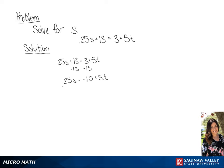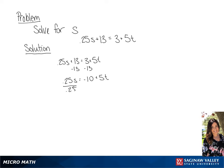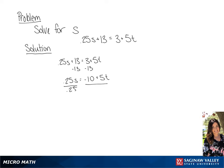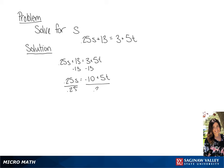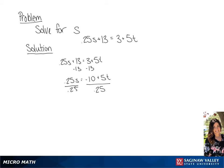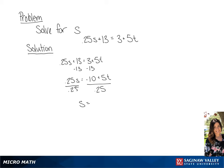Next we're going to divide both sides of this equation by 0.25. This will give us s isolated on the left side, so s = -40 + 20t.